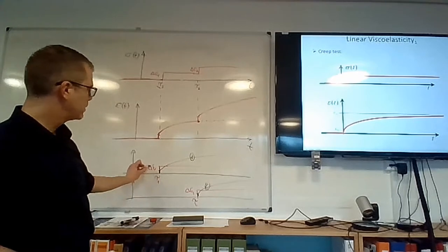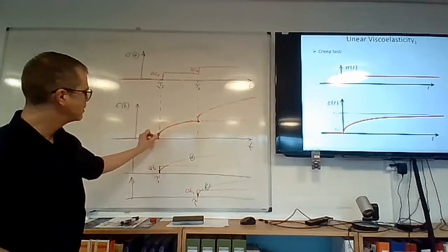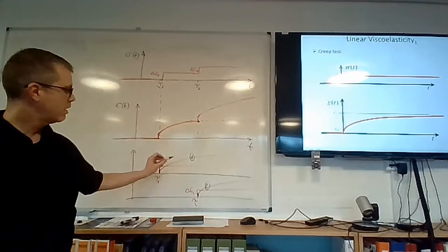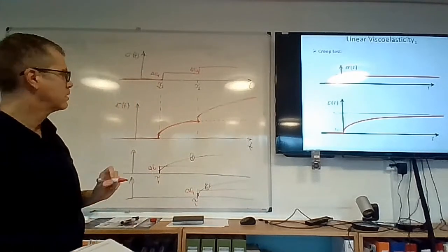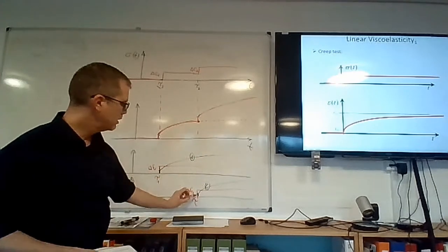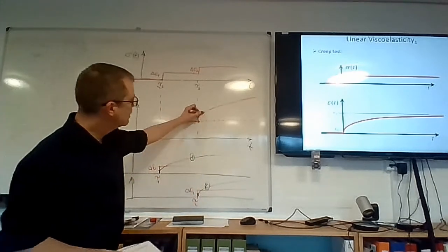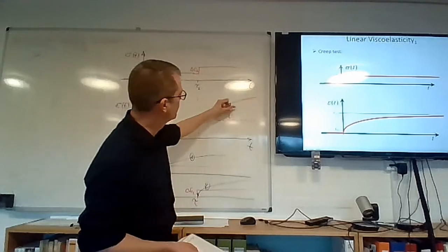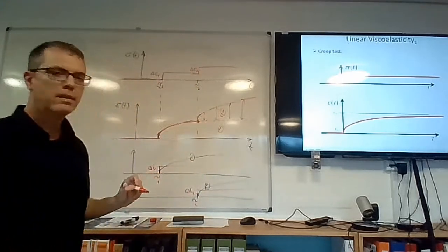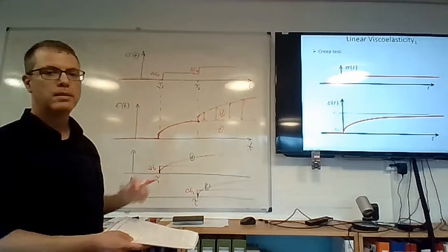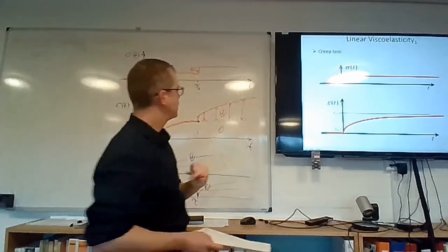The strain response due to delta-sigma-1 would be a small jump and then creep, and the strain response due to delta-sigma-2 only would be a small jump when tau equals tau-2 and then creep. If we sum up responses 1 and 2, we expect to get the correct outcome. At time tau-1, delta-sigma-1 was applied — this is line number 1. Line number 1 continues as the dashed line curve, and then the response to delta-sigma-2 starts at tau-2. The overall strain response is their addition.